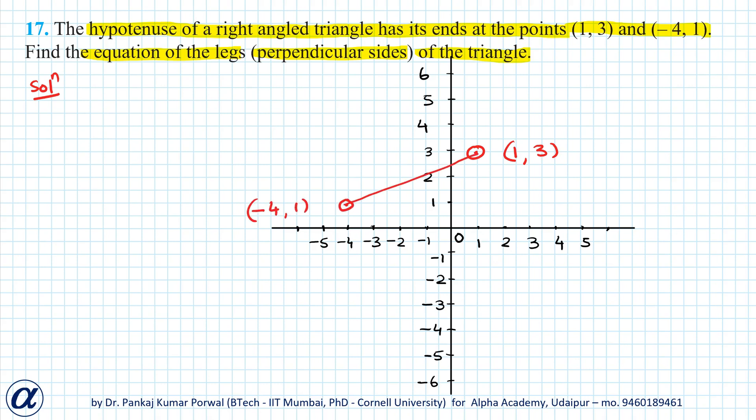Now there are infinitely many possible answers to this question, because if I make a circle with the hypotenuse as the diameter, then any point on the circle will form a right angled triangle, so I can make infinitely many right angled triangles.